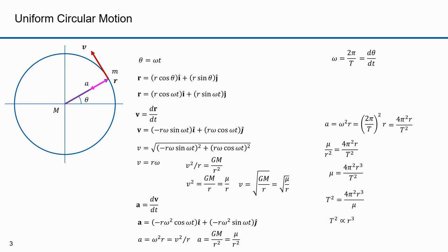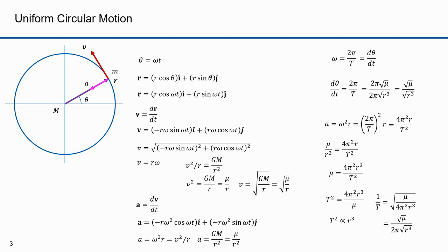Omega for uniform circular motion is the change in angle over the change in time. Since this is uniform circular motion, dθ/dt is constant for the entire orbit. Hence, dθ/dt equals 2π radians over the period T. Since 1/T equals the square root of mu over 4π² r³, which reduces to the square root of mu divided by 2π times the square root of r³, substituting gives dθ/dt equals the square root of mu over the square root of r³. For an ellipse, you'd substitute the semi-major axis for r in this equation and in others.